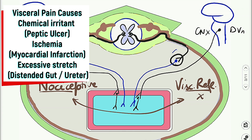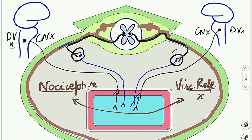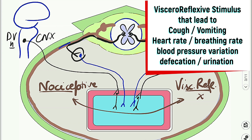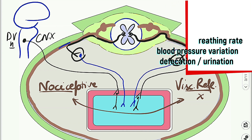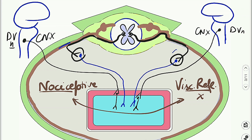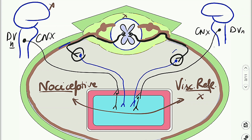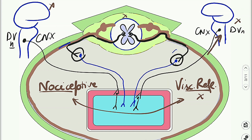Visceral reflexive sensations lead to cough, vomiting, increased heart rate, increased respiratory rate, and changes in blood pressure. So there are two types of visceral sensations. Their target is the central nervous system — brain or spinal cord. Sensory fibers follow the motor fibers in reverse direction: if a sensory fiber follows parasympathetic motor fibers in reverse, it reaches the brain; if it follows sympathetic motor fibers in reverse, it reaches the spinal cord.